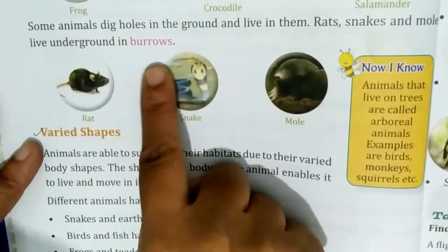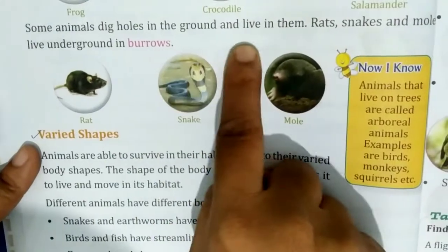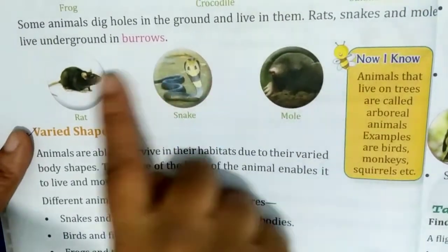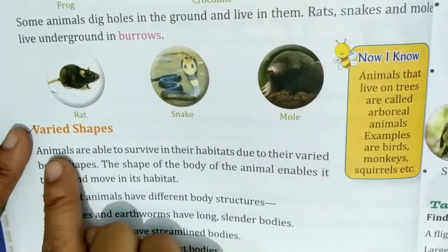Some animals dig holes in the ground and live in them. Rat, snake and mole live underground in burrows.